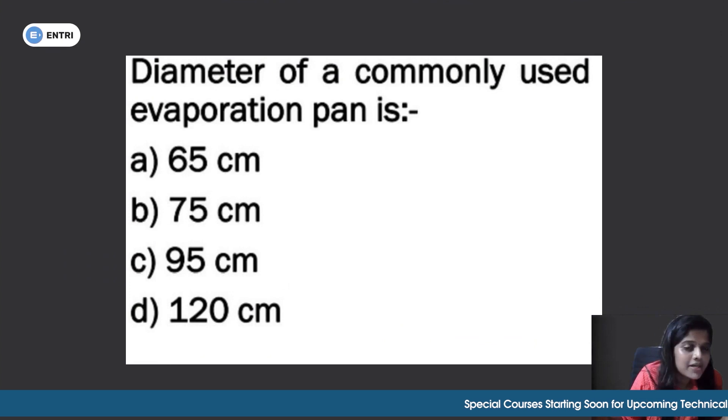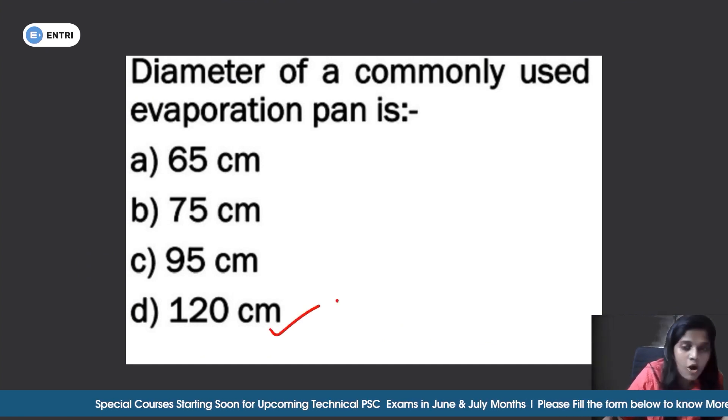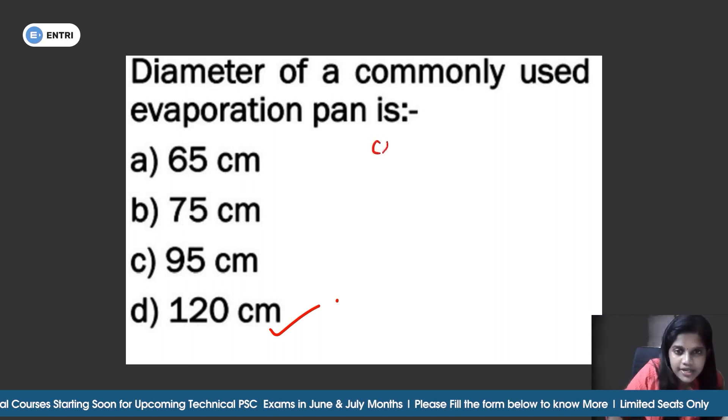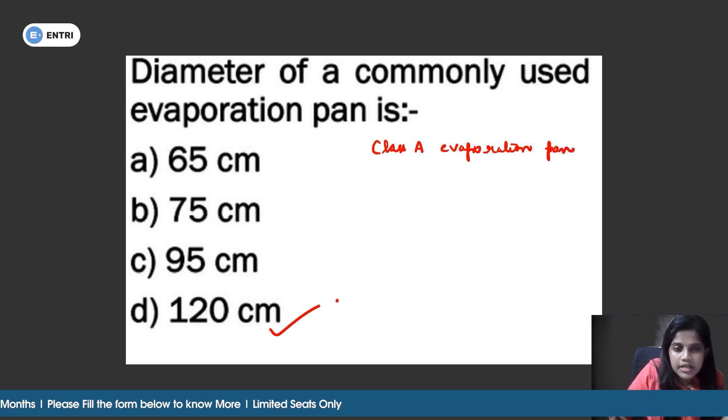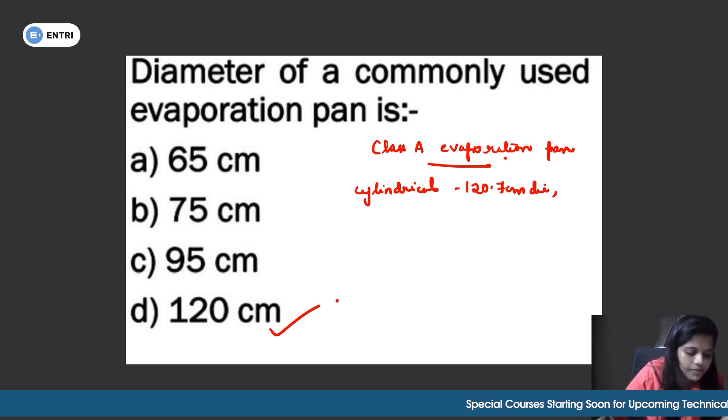Next question: diameter of a commonly used evaporation pan. Commonly used evaporation pan is 120 cm. Now we will use Class A evaporation pan. So the correct answer is option D. It is cylindrical in shape. The diameter is 120.7 cm diameter. The depth is 25 cm. That is Class A evaporation pan.